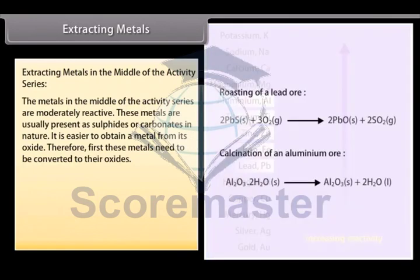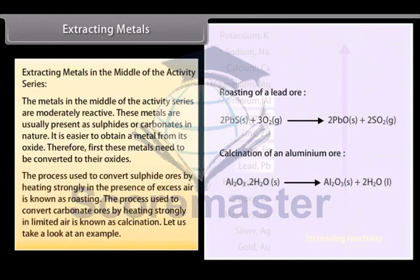Extracting Metals in the Middle of the Activity Series. The metals in the middle of the activity series are moderately reactive. These metals are usually present as sulphides or carbonates in nature. It is easier to obtain a metal from its oxide. Therefore, first these metals need to be converted to their oxides. The process used to convert sulphide ores by heating strongly in the presence of excess air is known as roasting. The process used to convert carbonate ores by heating strongly in limited air is known as calcination.